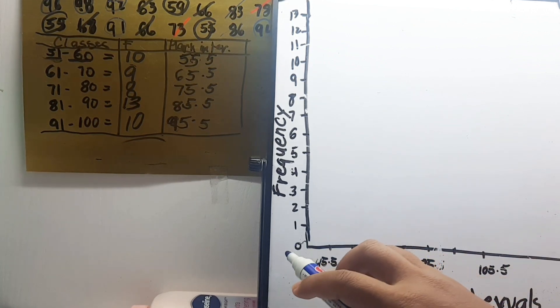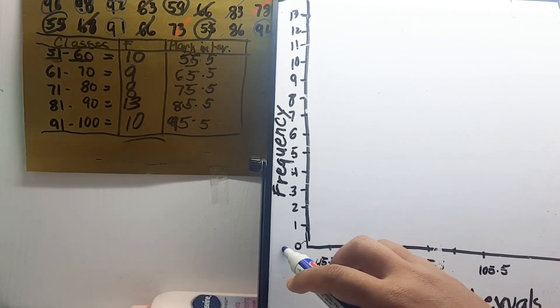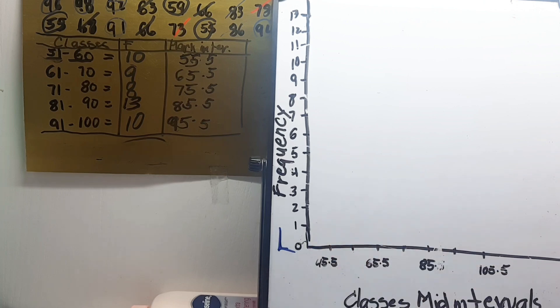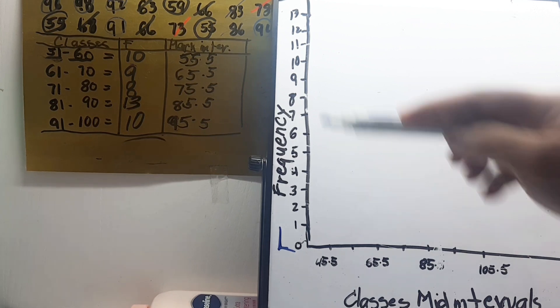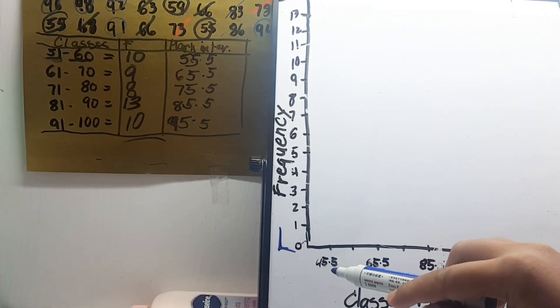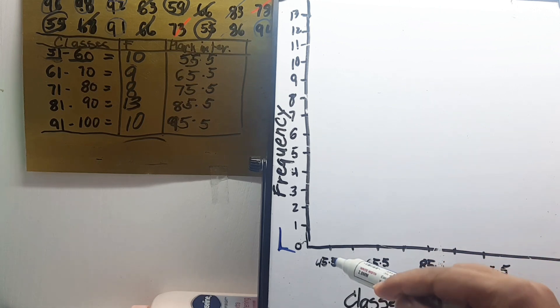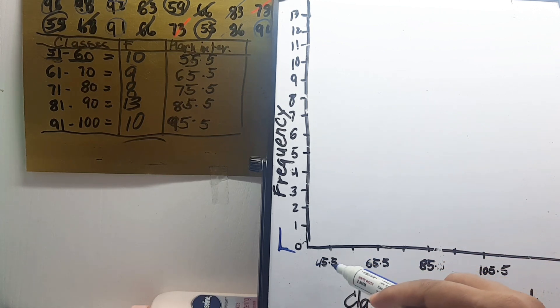We notice this zero. We start with zero on the vertical and horizontal line. So our class mid intervals, let's give a space here, which is 45.5.